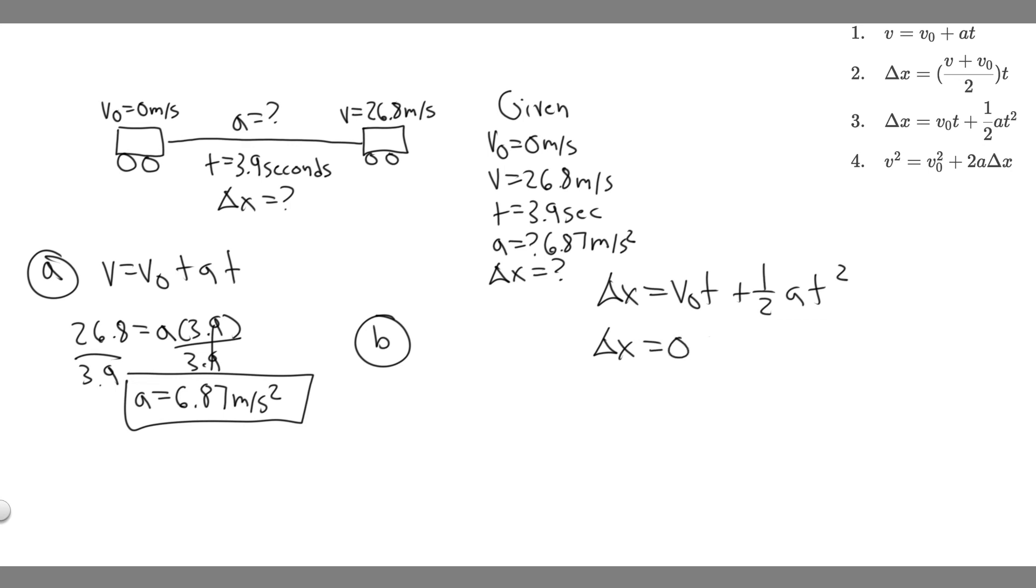So the initial velocity is zero. Zero times t is still going to be zero. So it's just one half times the acceleration, which is 6.87, times t squared. So t is just 3.9, so it's 3.9 squared. So you just want to plug this in, 0.5 times 6.87, and then multiply by 3.9 squared.